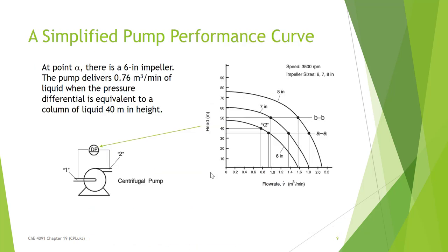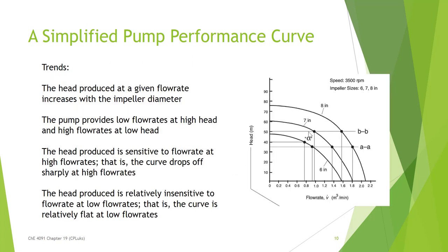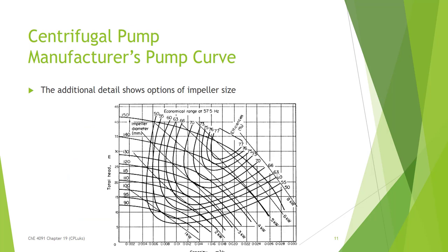This is a simplified pump performance curve. There's a great example in your book that I really recommend you read — they go through it for various sizes of impellers. If you look at the flow rate and the head, for instance at point alpha, where we have a 40-meter head, we have a flow rate of just less than 0.8 cubic meters per minute. They also discuss how, if you keep the same head but change impellers, with a larger impeller you're able to get a larger flow rate. Manufacturer curves look a lot more complex because they include information for many possible sizes. I will link you to a video that goes through this in great detail.